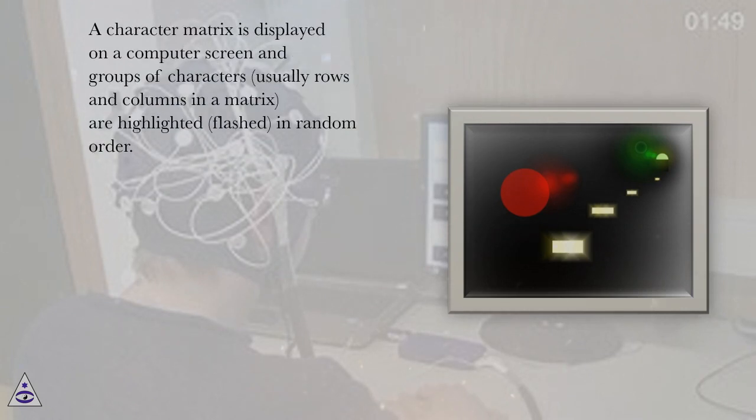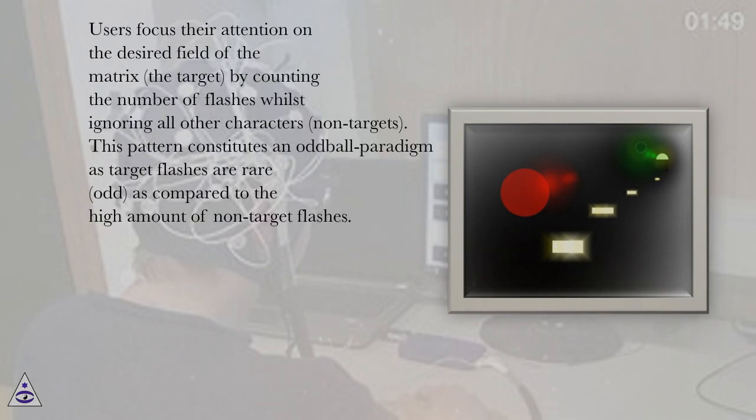A character matrix is displayed on a computer screen and groups of characters, usually rows and columns in a matrix, are highlighted, flashed, in random order. Users focus their attention on the desired field of the matrix, the target, by counting the number of flashes whilst ignoring all other characters, non-targets.